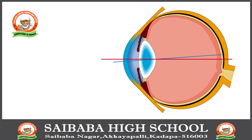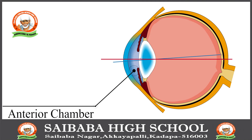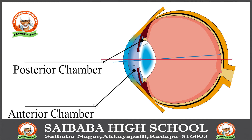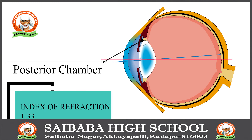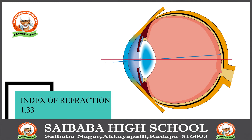Next, Anterior and Posterior Chamber. The anterior chamber is between the cornea and the iris. The posterior chamber is between the iris and lens. The index of refraction is 1.3.